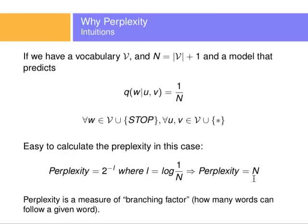Let's get this intuition out with an example. Let's assume we have vocabulary V where n is the vocabulary size plus one, and a model that predicts every possible word that comes after any two words is 1 over the number of words. So every word coming after two words has equal probability of happening.